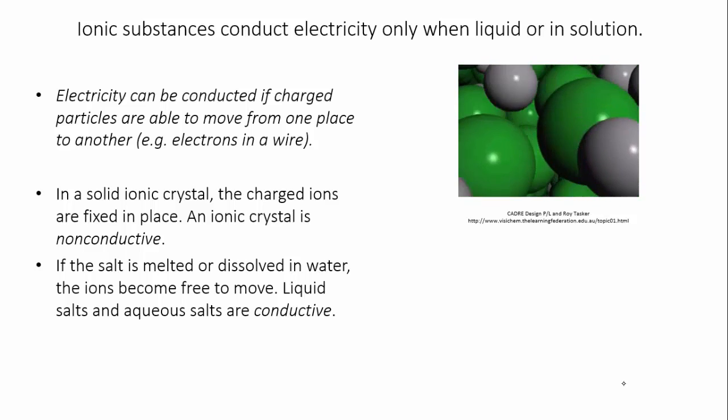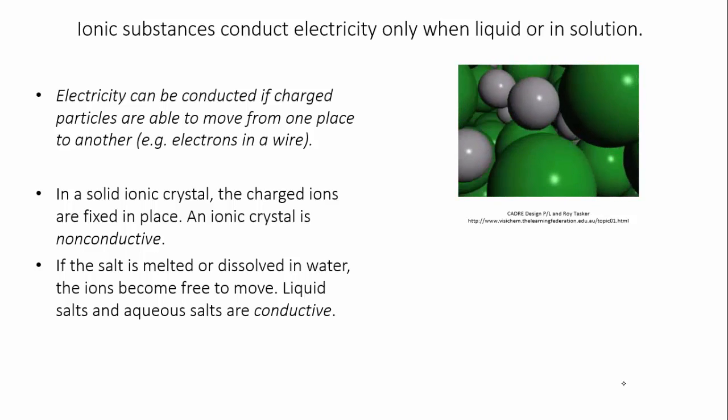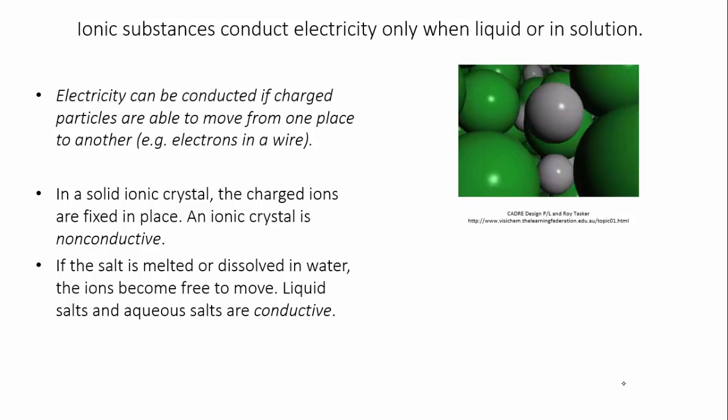If you put two electrodes in a molten salt, the positive ions will travel in one direction, and the negative ions will travel in the other, and so the current is conducted.